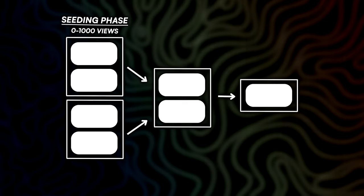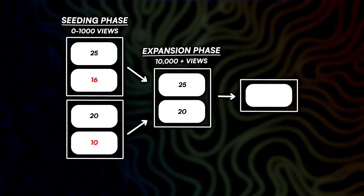The seeding phase is the initial phase — that's zero to 1,000 views. Imagine there's a bunch of different videos posted and you're fighting amongst everybody to get attention. So let's say one video gets 25 points and another gets 16 points — the one with 25 points will move forward into the expansion phase while the other will be stuck at the initial phase. The video that gets 20 points versus the 10-point video, the 20-point video wins and moves forward. This is around 10,000 views. The video with the best metrics overall then moves on to the viral phase.